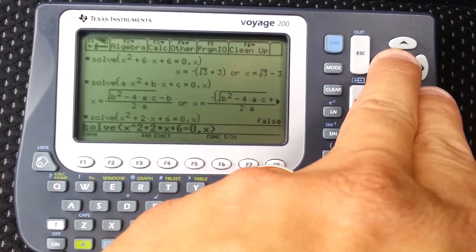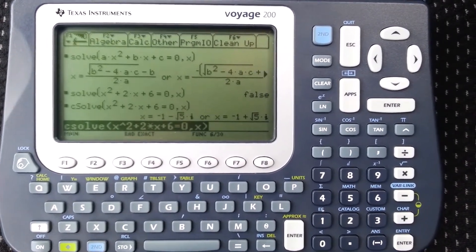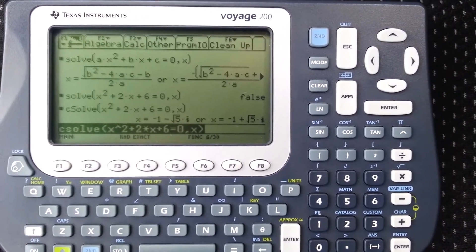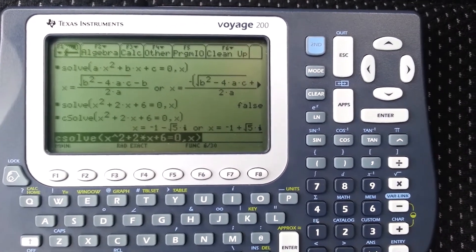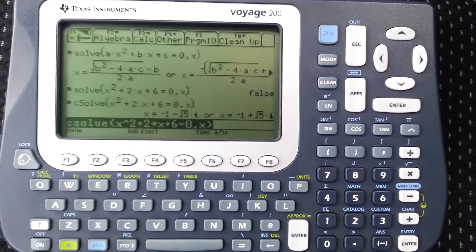But if you do c solve, then it solves it and finds the complex solutions. So you see i there, which is a square root of negative one. So c solve is something else that's good to know.